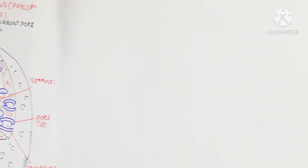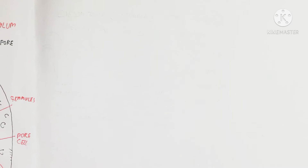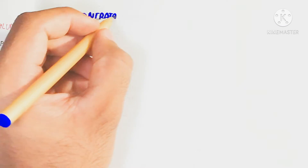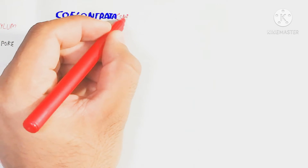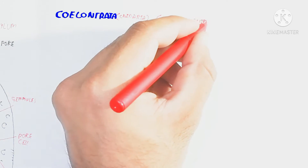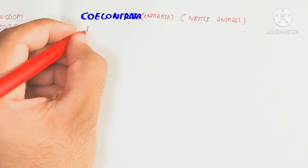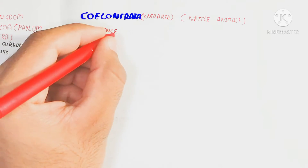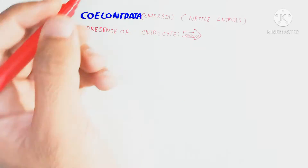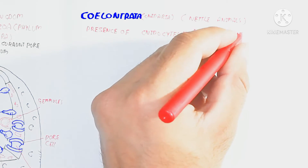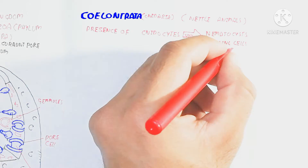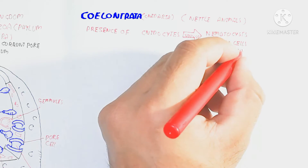Phylum Cnidaria is characterized by stinging cells on the upper surface, known as cnidocytes, which contain a structure called the nematocyst. So the cell is the cnidocyte and the structure it produces is the nematocyst. The nematocyst is a set of different types of material forming an organ-like structure — the stinging cell on the tentacle.